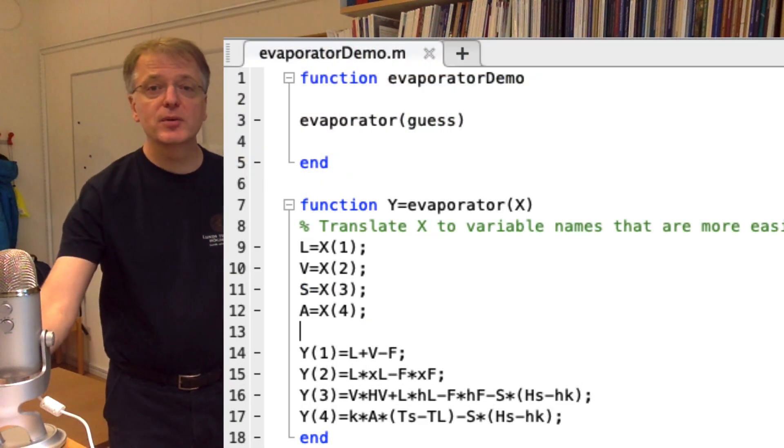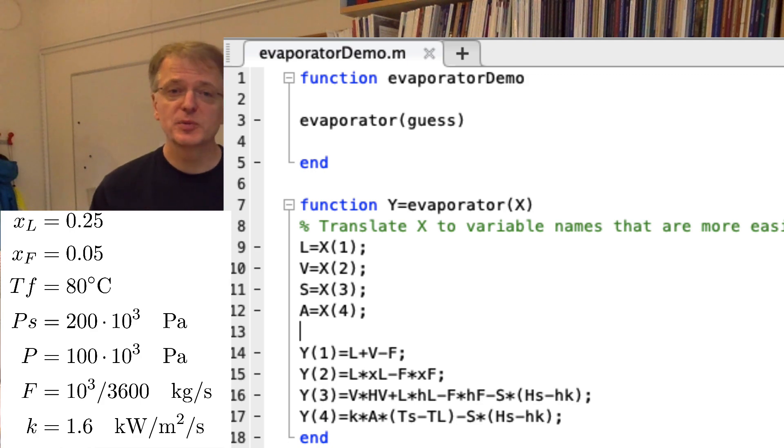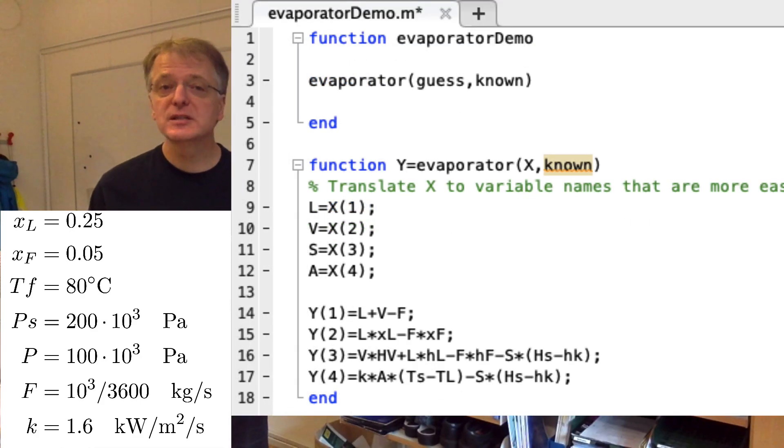In our exercise text we had a number of known parameters. Let us add a second argument, known, that will contain all these parameters.